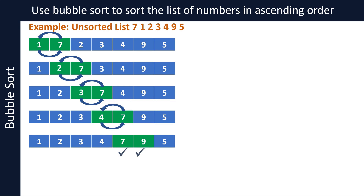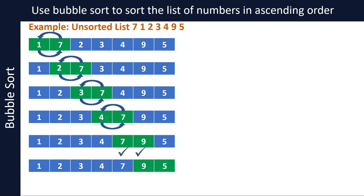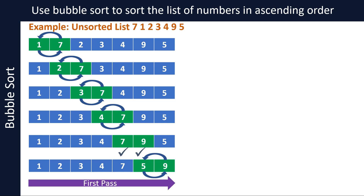The list stays the same: 1, 2, 3, 4, 7, 9, and 5. Now take the last two items and compare. Since 9 and 5 are in the wrong order, swap them. The list now becomes 1, 2, 3, 4, 7, 5, and 9, and we have reached the end of the list. This is called the first pass.